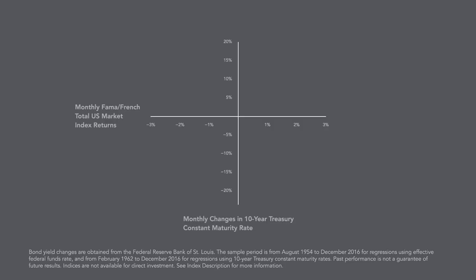As shown in this graph, over the sample period from February 1962 to December 2016, changes in the 10-year Treasury constant maturity rate do not have clear impacts on equity returns.